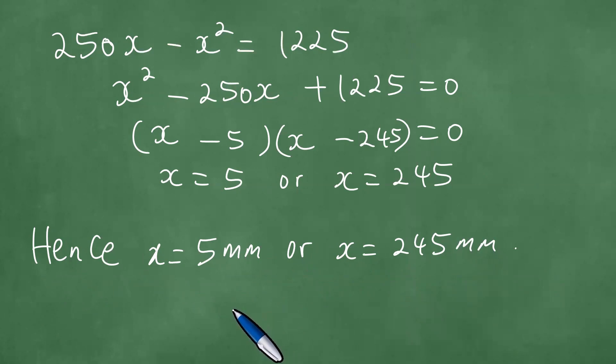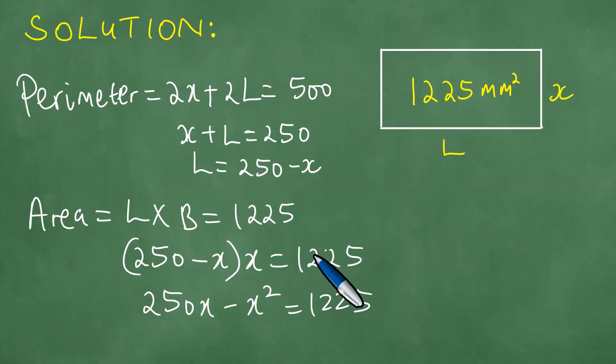This solution is extremely important for us, as it is shedding light on the actual dimensions. Because if we can take any of these, if you take x equals 5, then you look at the rectangle. So we know, therefore, that this is 250 minus x.